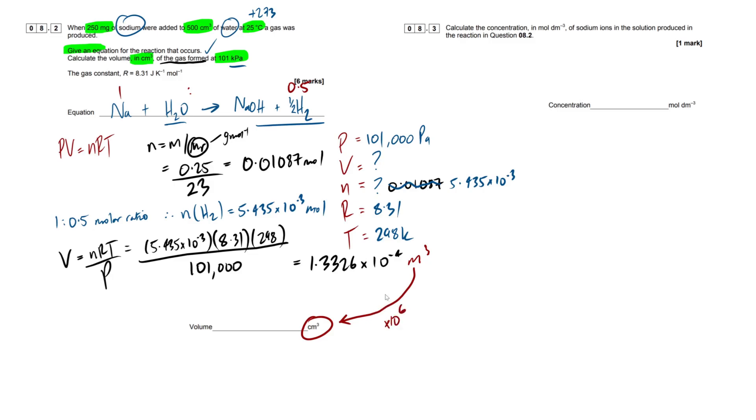It's simply times 10 to the 6. You just have to times it by a million. So if we do that, it's going to give us an answer of 133.26 centimeters cubed, but ideally, we want to give our answer to the appropriate number of significant figures. So that's going to be three significant figures, so I'm just going to round this down to 133. So hopefully you've got that answer as well.